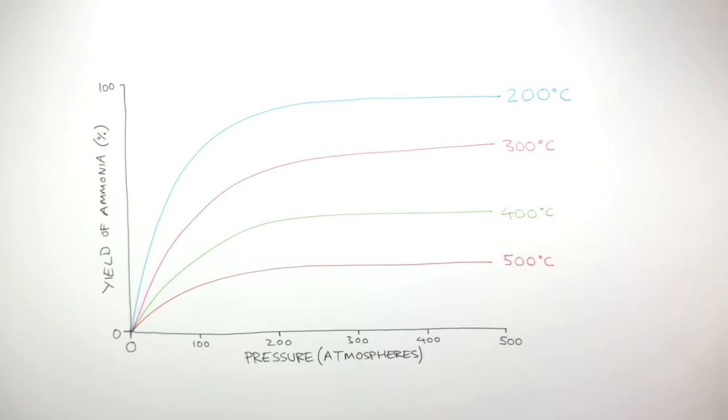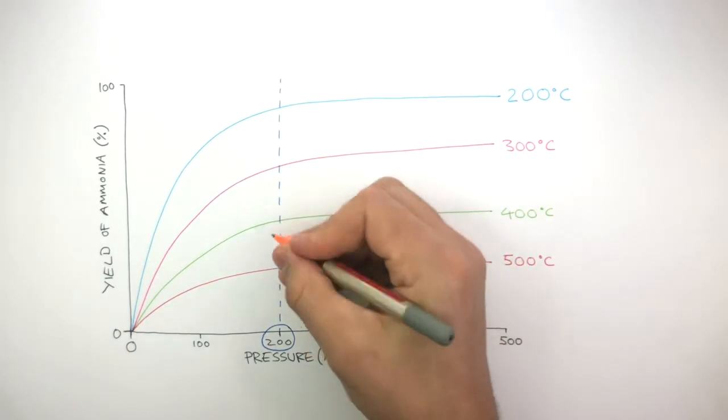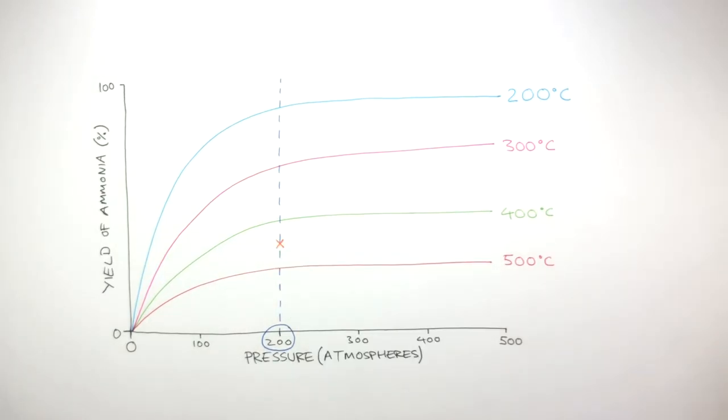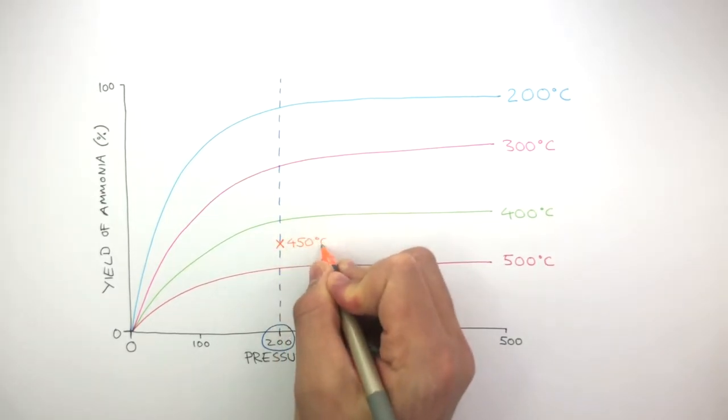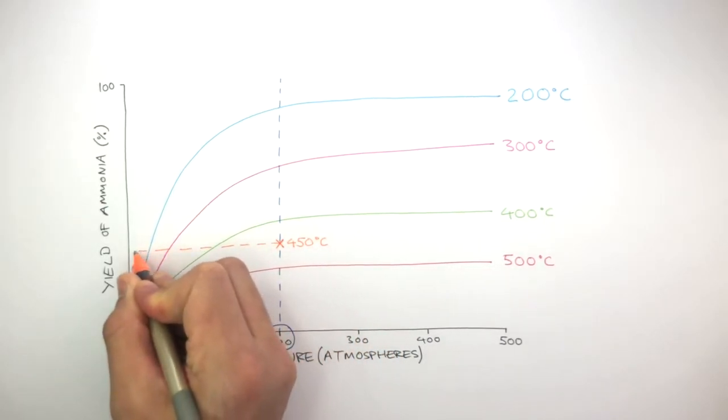We already know the Haber process uses a pressure of 200 atmospheres and a temperature of 450 degrees Celsius, in between the 400 and 500 degree lines. When we draw across at the 200 pressure line and extrapolate, we can see the yield of ammonia is this.